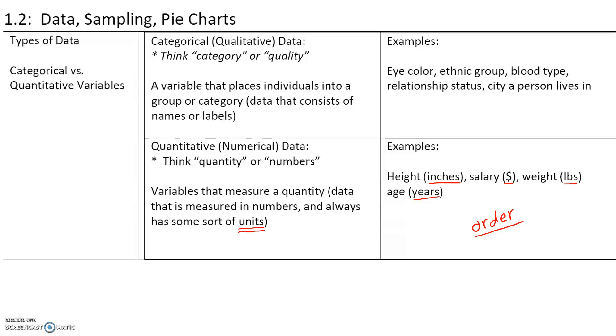Okay, so two ways to think about whether a variable is quantitative or categorical. If you can order the variable in some way, and if it has units, it's quantitative or numerical. If you can place it in categories without having any kind of units or order, then it is categorical or qualitative.